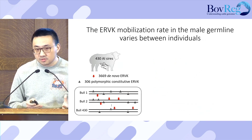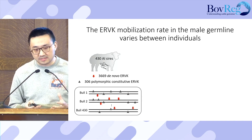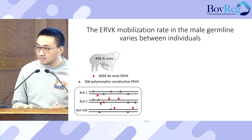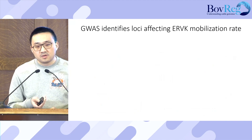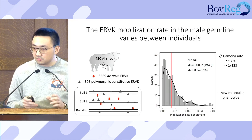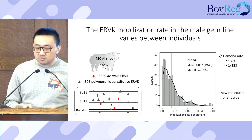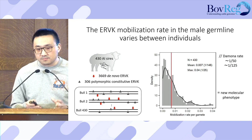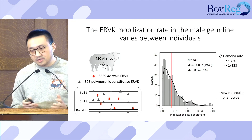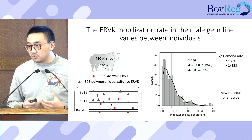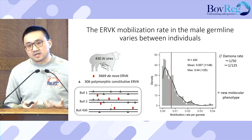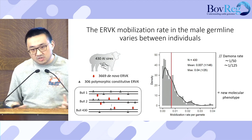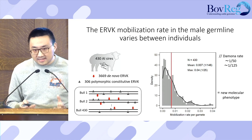We further applied this method to 413 artificial insemination straws, obtaining more than 3,600 de novo ERVK insertions plus 300 polymorphic ERVKs. As you can see, the rates vary extensively, ranging between 0 and 1 in 25, with an average of 1 in 147. The mobilization rate behaves like an intriguing molecular phenotype that differs dramatically between individuals but is stable within an individual, even across measurements many years apart.